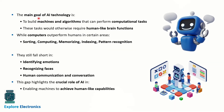AI performs tasks that typically require human intelligence. The main goal of AI is to build machines and algorithms that can perform computational tasks that would otherwise require human intelligence or human-like brain functions. In a similar manner, machines and algorithms need to be built so they can perform those tasks.